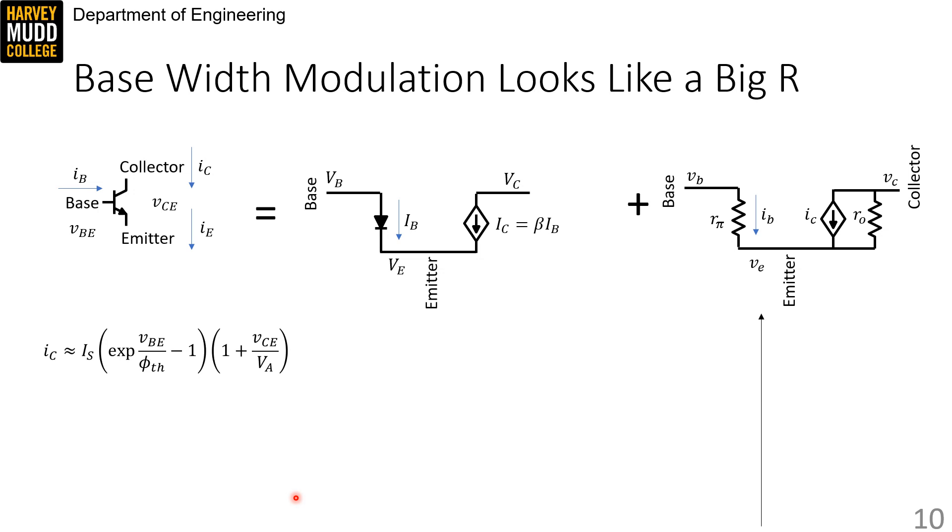We're going to take a derivative of the IC expression as usual to find the value of RO, so I've copied it here. Taking the derivative, we bring down a factor of the early voltage, and then don't need to approximate when we substitute in IC in place of IS, e to the VBE over phi TH minus 1.